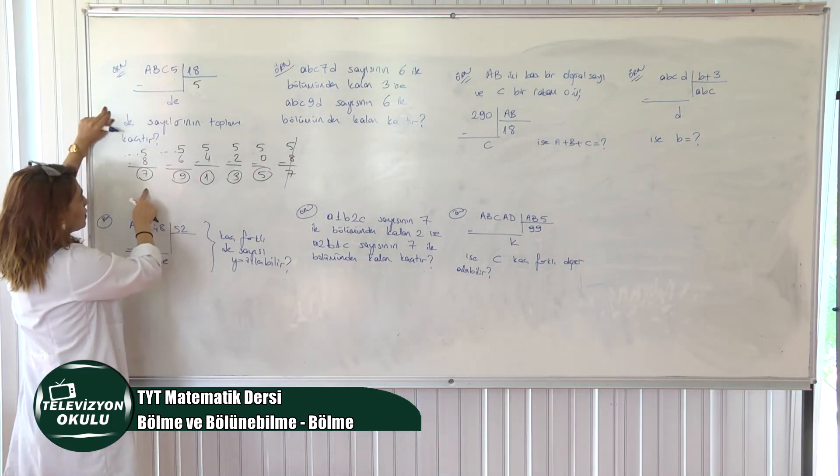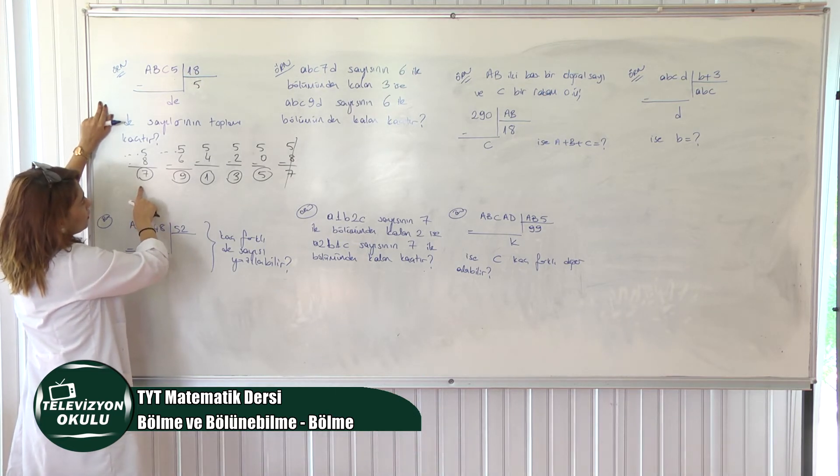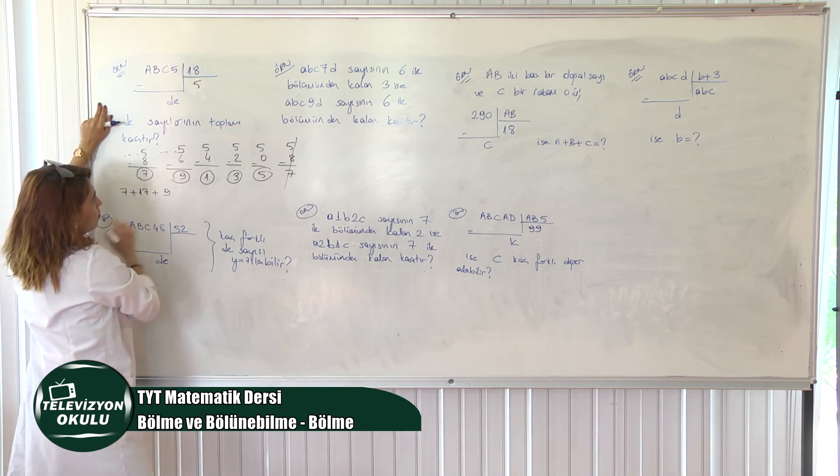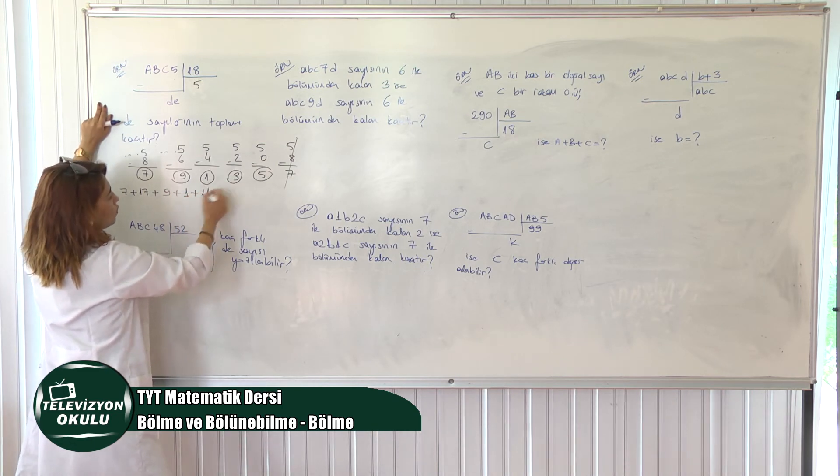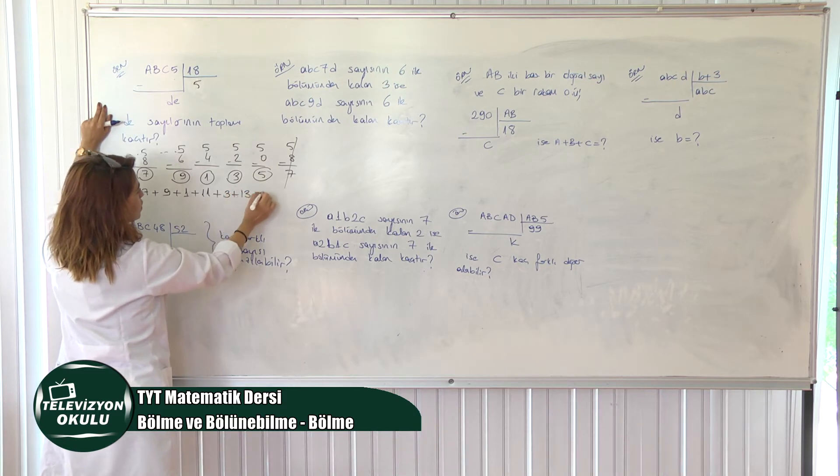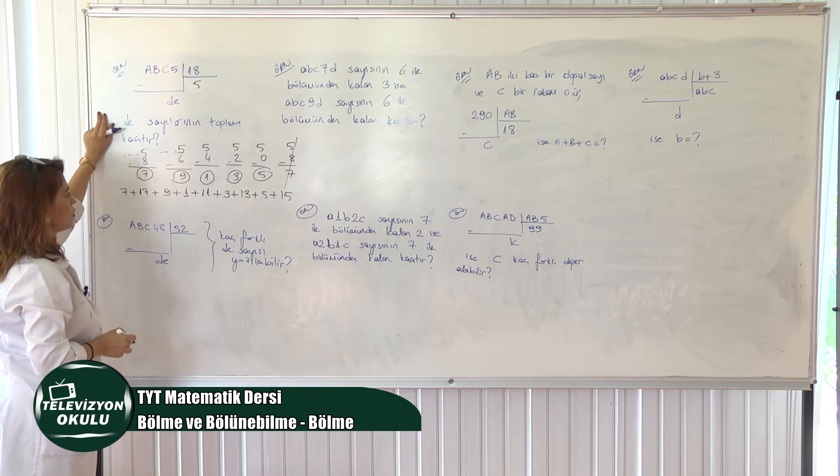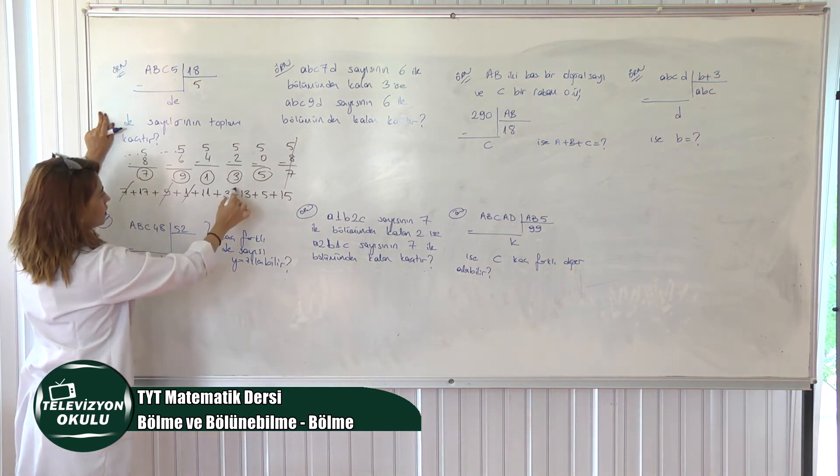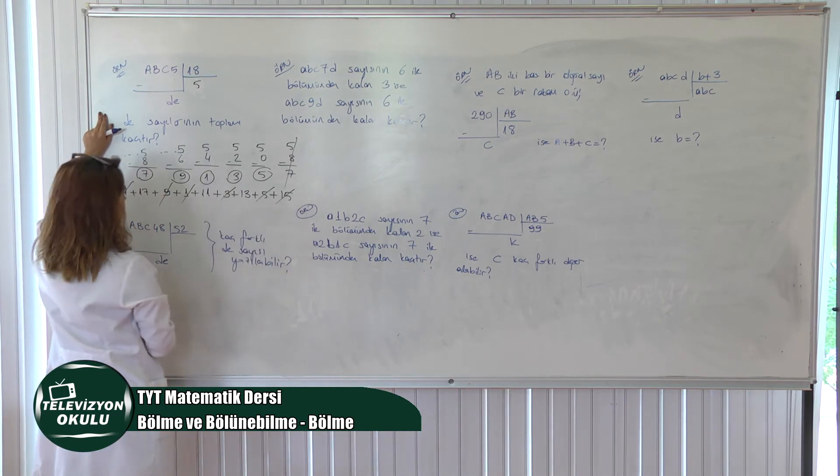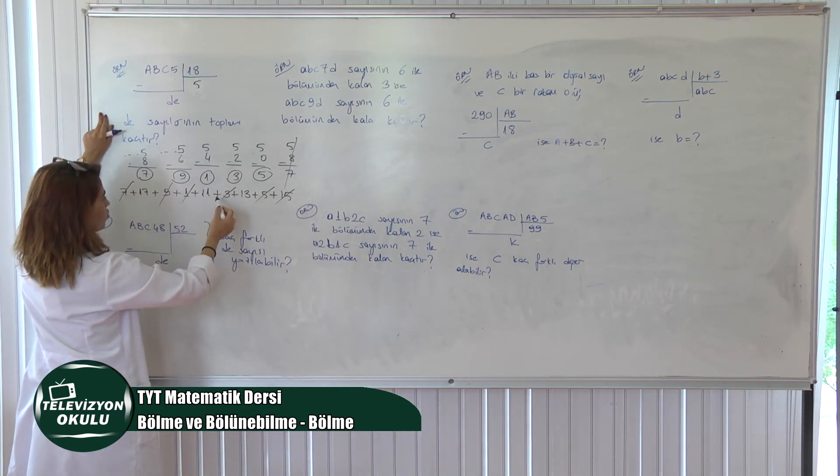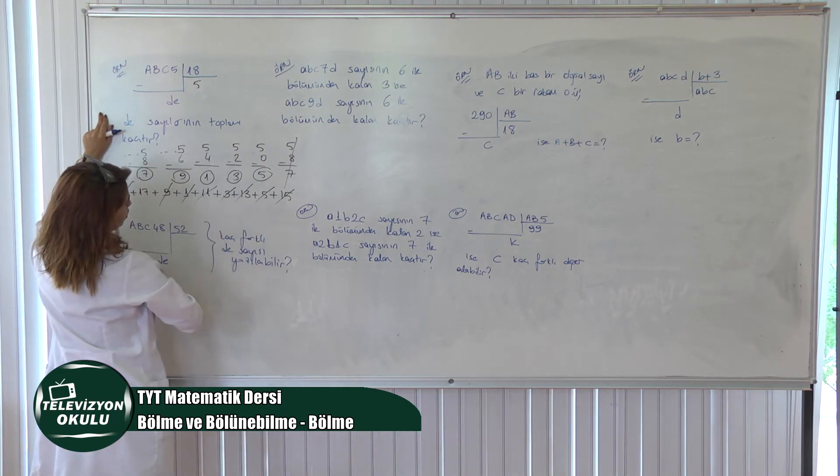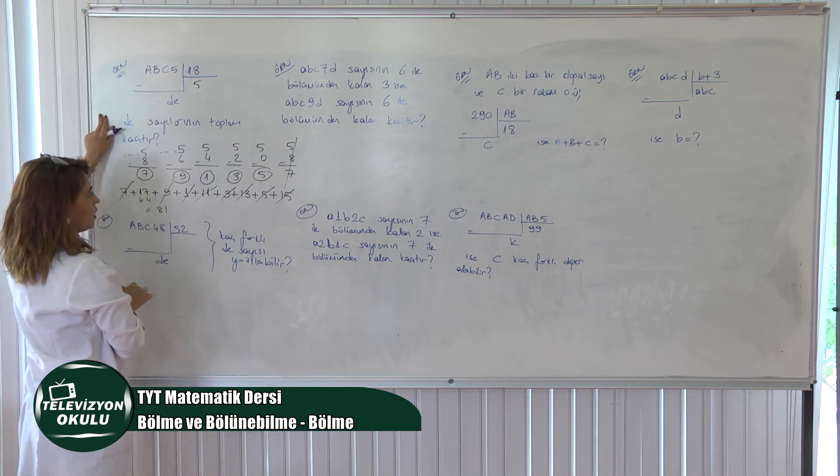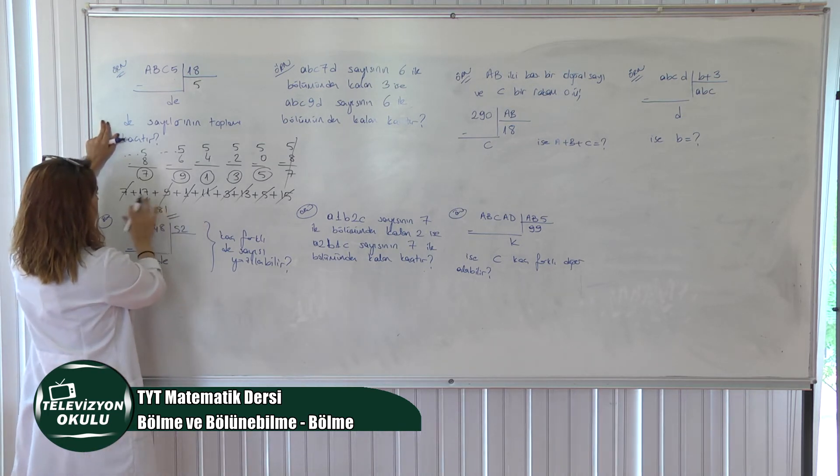Peki, sonu 7 ile biten neler var? Bir 7 var arkadaşlar. Bir de 17 var. 18'den küçük olacak değil mi? 7 var, 17 var. Sonu 9 ile biten sadece 9 var. 19'u alamam. Sonu 1 ile biten 1 var. Bir de 11 var. 3 ile biten, 3'ü de alırım, 13'ü de alırım, 5 ile biten 5'i de alırım, 15'i de alırım diyorum. Bunların toplamı isteniyor bizden. Hemen toplayalım. 9, 1 daha. 10, 17, 20. Buradan da 20 geldi. 40 oldu. Hiç sevmiyorum bakkal hesabı. 40, 53, 64, 17 de burada var. Nedir? 81 yaptı galiba. Hata yaptıysak. Affola. Evet, 81 yaptı. Toplam arkadaşlar.